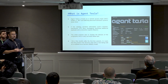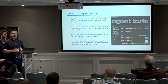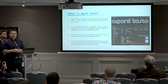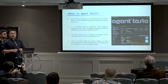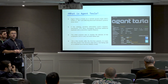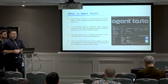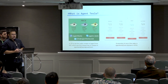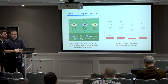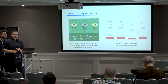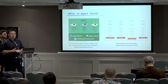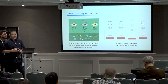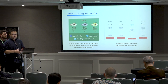The initial purpose of Agent Tesla, as the developers claim, was to monitor employee devices and carry out work follow-ups. But a few months after the first variant, it was seen that the product had become paid and was being sold. The team started making their first sales at agenttesla.wordpress.com in 2014, taking the first steps toward the malware-as-a-service structure they would build in the future.